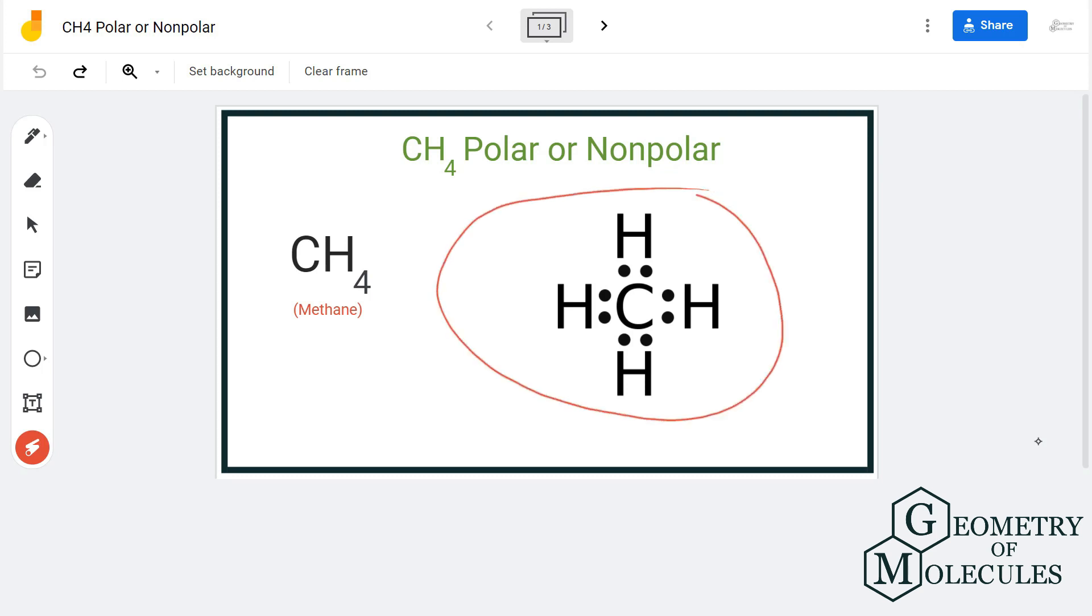Here is the Lewis structure for methane in which carbon is in the central position, sharing all its four electrons with four hydrogen atoms. As you can see, it is quite a symmetrical molecule.